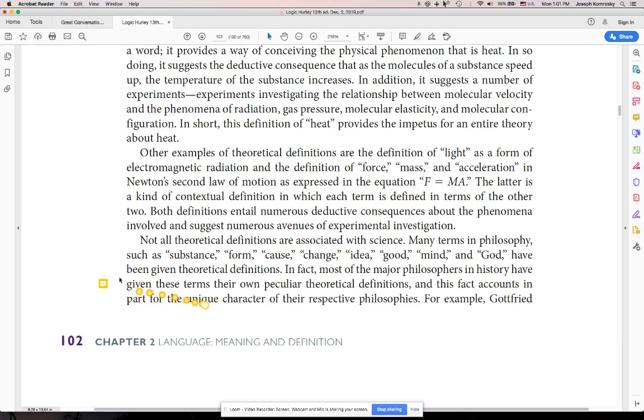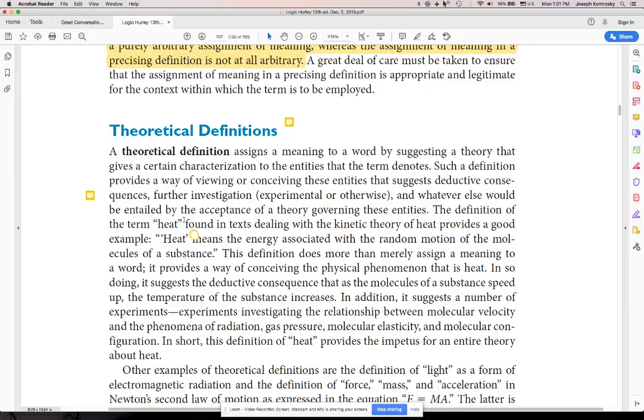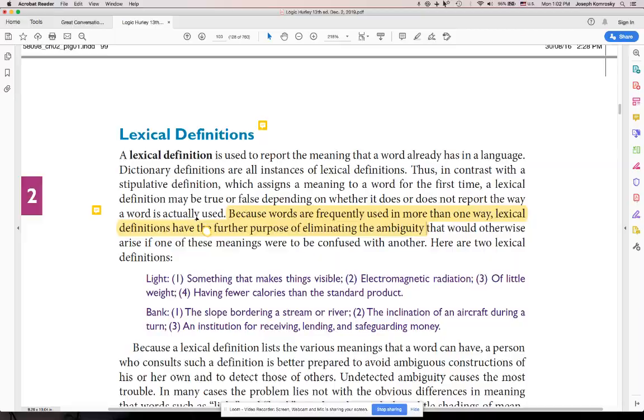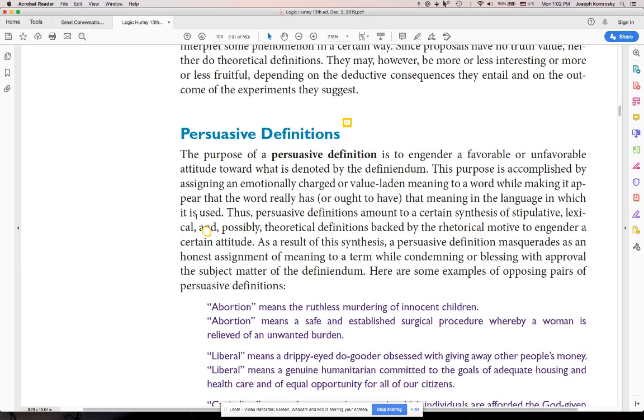Bottom line with this, scientific and philosophical terms are theoretical. And that is just a way of defining something in a theoretical way versus a precising way, a lexical way or a stipulative way.